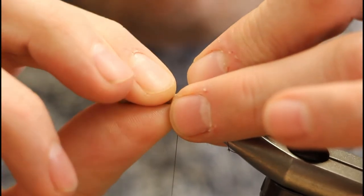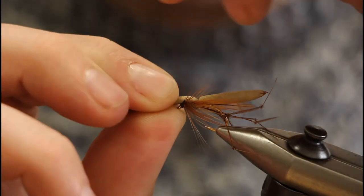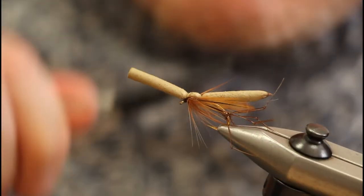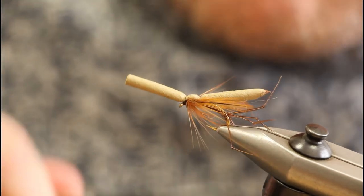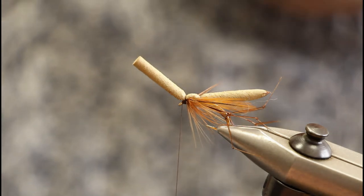Now you just bring this foam tube over the top. Pull it fairly tight and then catch it in with about three or four nice tight turns. And then we just whip finish.